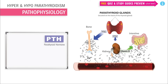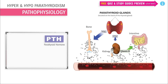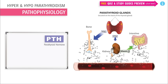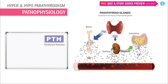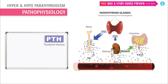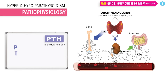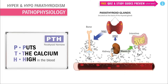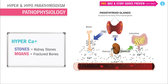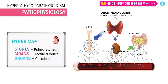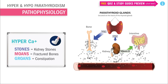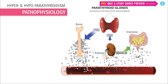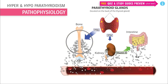With too much PTH and hyperparathyroidism, there is too much calcium in the blood — it's like every organ is being squeezed for their calcium. PTH is the bully taking all their lunch money. PTH puts the calcium high, so blood calcium goes up. We have stones, moans, and groans: stones in the kidneys, moans from broken bones, and groans from rock-hard bowels.